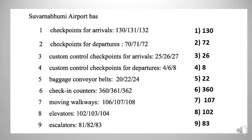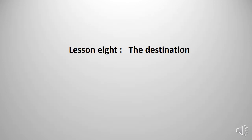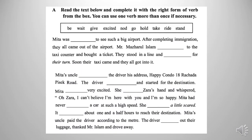So this is the exercise based on the listening part. We have already finished Lesson 7 and we are now in a new lesson — Lesson 8: The Destination. At the beginning of this lesson, we have a gap filling activity. Read the text below and complete it with the right form of verb from the box. You can use one verb more than once if necessary. The given verbs are: be, wait, give, excited, not, go, hold, take, ride, stand.